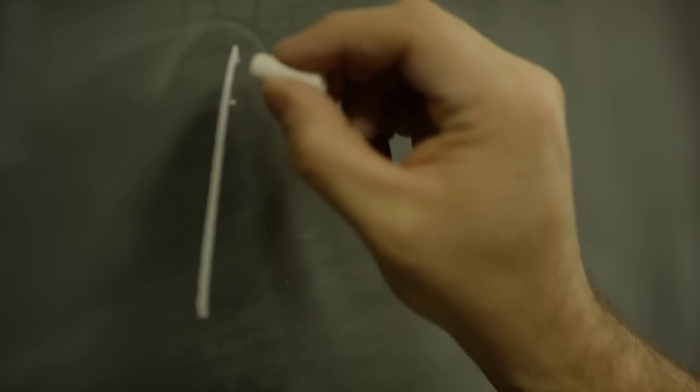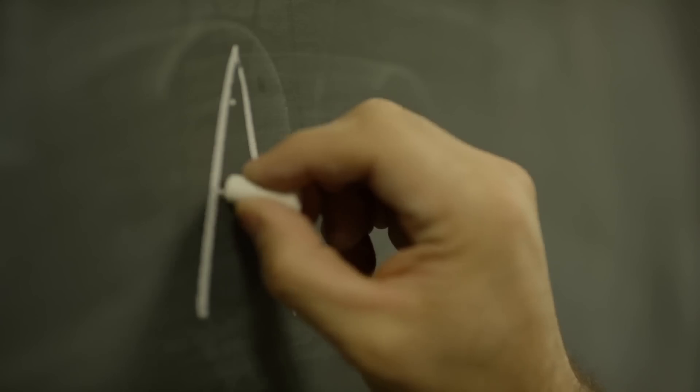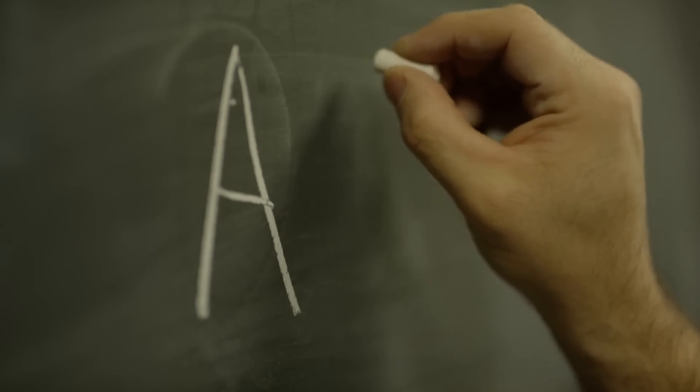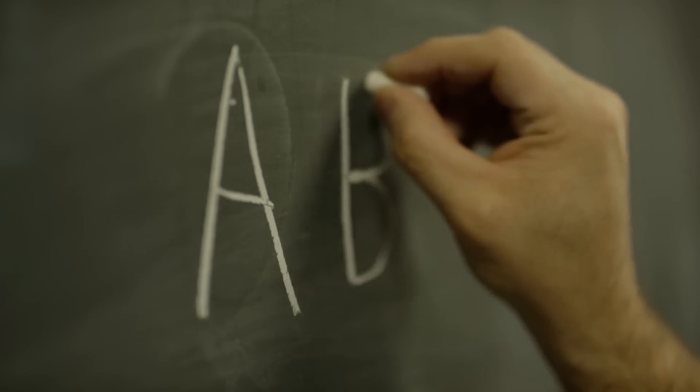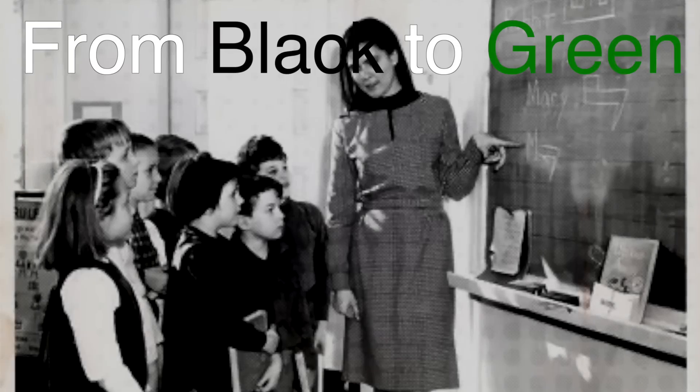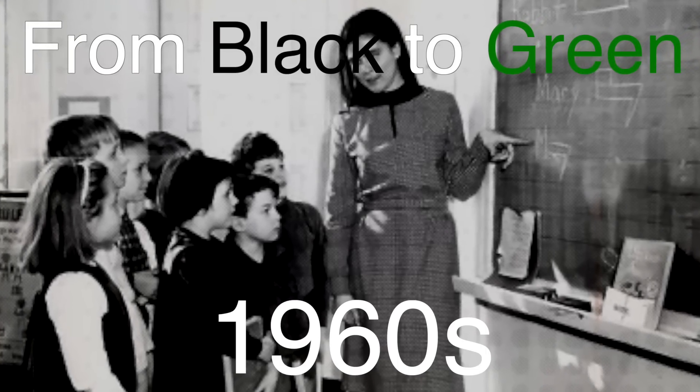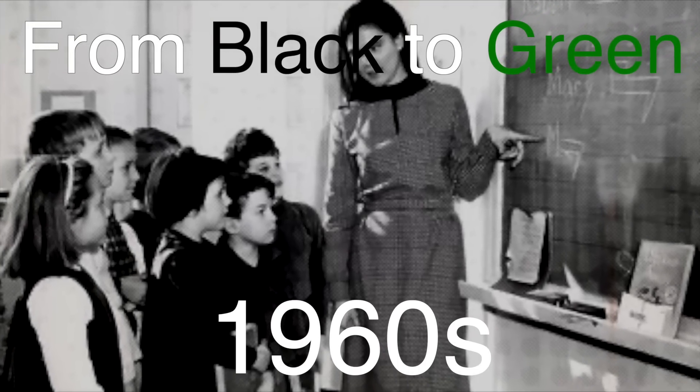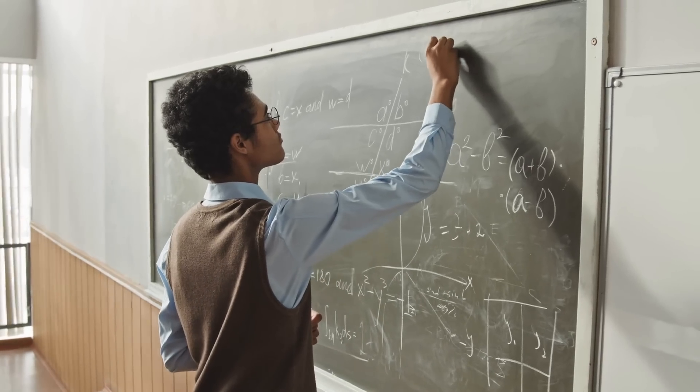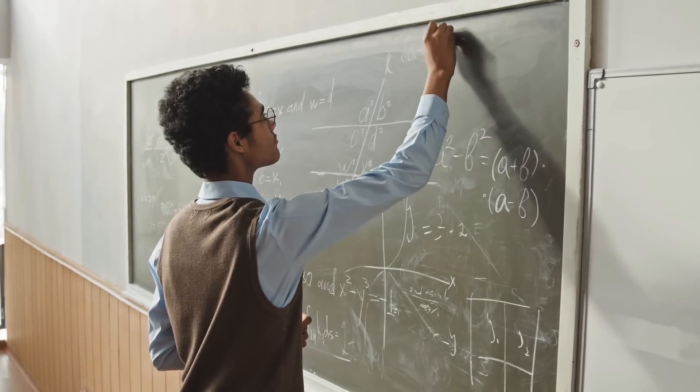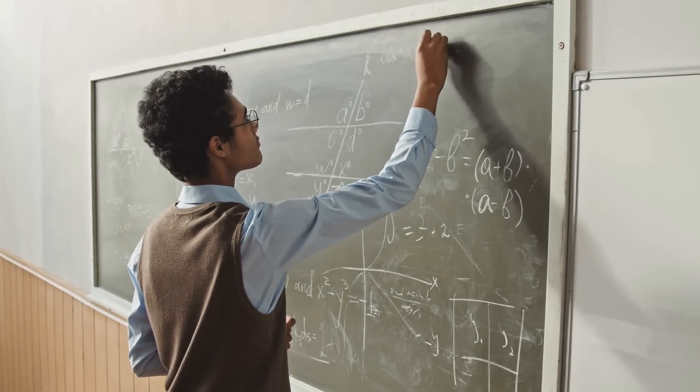But by the mid-20th century, something unexpected happened. Chalkboards started turning green. The shift from black to green began around the 1960s. But this wasn't some random aesthetic decision. The green chalkboard came into existence because of a specific material change and some important practical reasons.